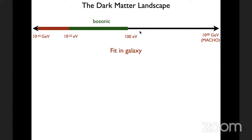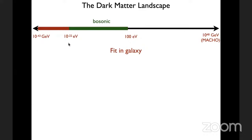For a boson, there's another limit: even though you can pack lots of bosons in the same mode, the de Broglie wavelength of the boson gets larger as mass goes down. Eventually the de Broglie wavelength becomes larger than the galaxy itself. That puts a limit of around 10^-22 electron volts on the lightest boson that could be all of the dark matter. So observationally there is an enormous range — around 60 to 70 orders of magnitude — between what we know.